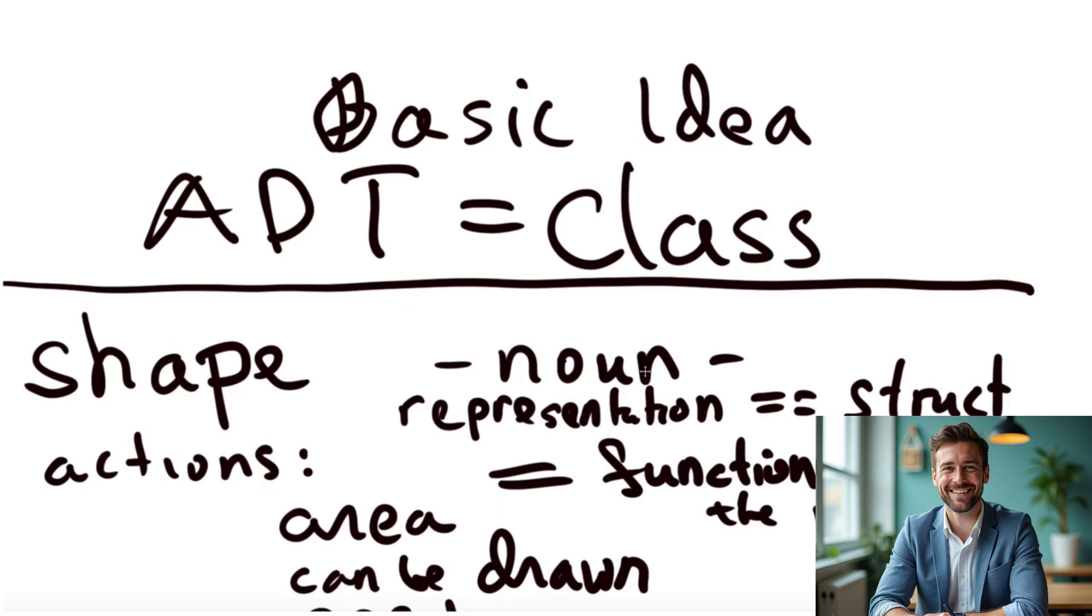But the struct by itself doesn't have operations and the struct by itself is openly public so it can be tampered with. One of the things that's important in modern programming is encapsulation, and encapsulation allows you to hide stuff.